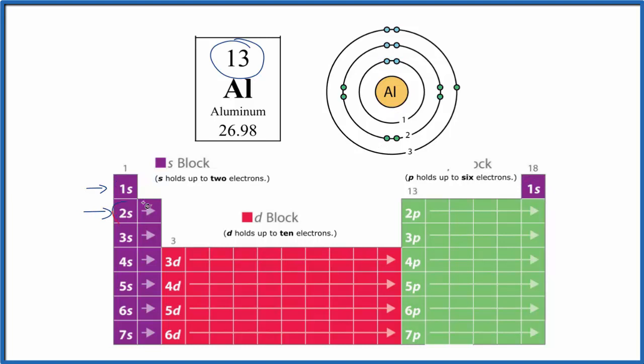That has one, two. Then we keep going across here, three, four, five, six, seven, eight. So the second energy level has eight valence electrons. Two, four, six, eight. That's the second energy level.